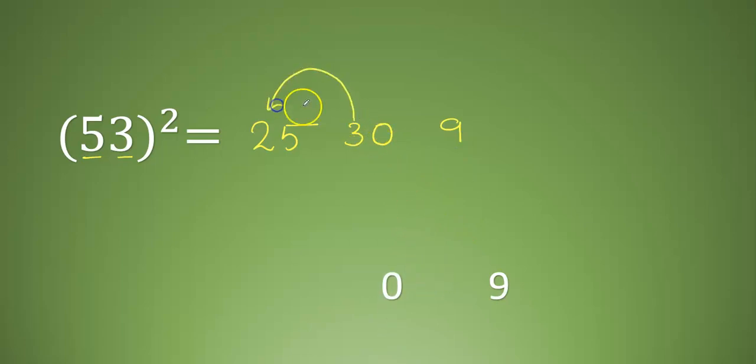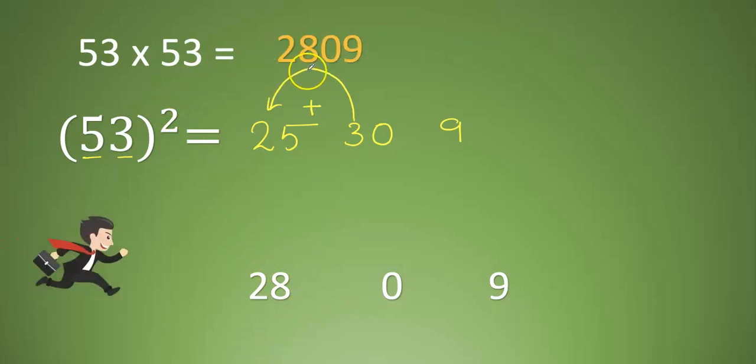3 into 6 is 18, 18 to the next place. 25 plus 3 is 28. So 53 into 53 is 2809.